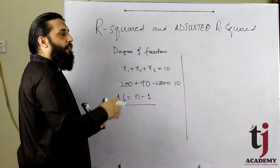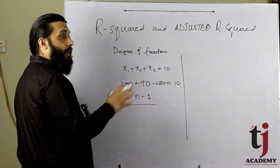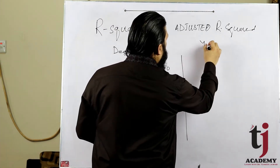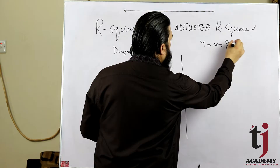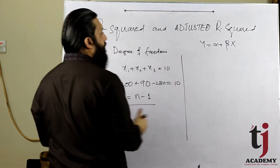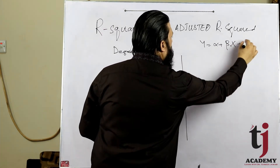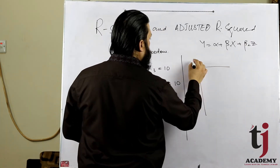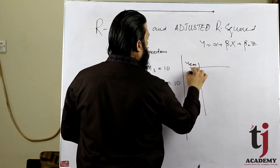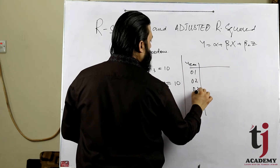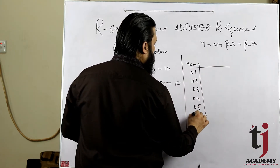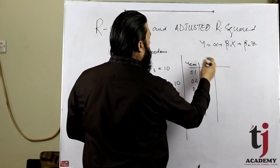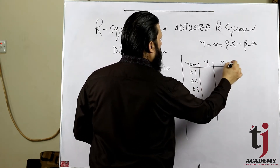Degree of freedom concept for regression: for example, a model y = α + βx with 2 variables. We have 3 variables y, x, z and number of observations from year zero-one to zero-six.